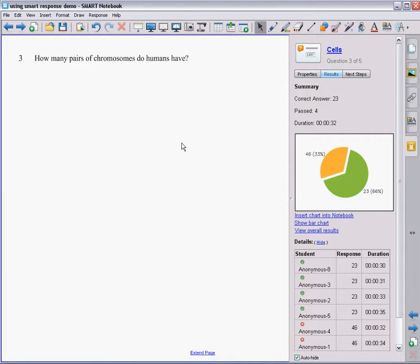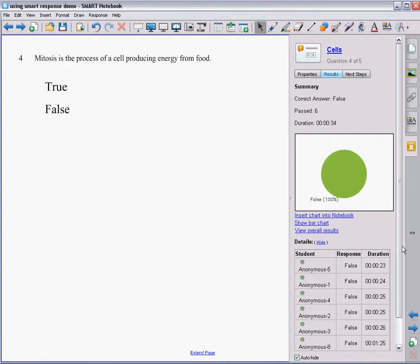I can get specific information about specific questions, so I can look at if there's a specific concept I need to go back and address again. And this question I'm really happy with because 100% of my students got it right. Then I know that they really have this concept and I can move on with the next step of this concept.